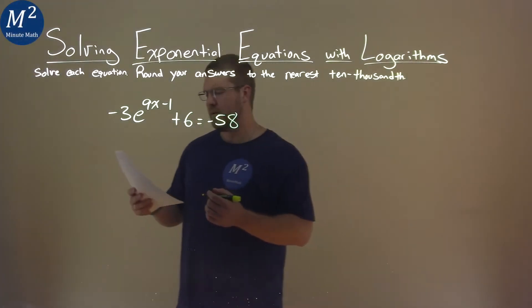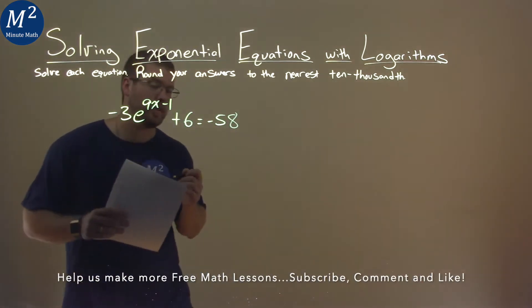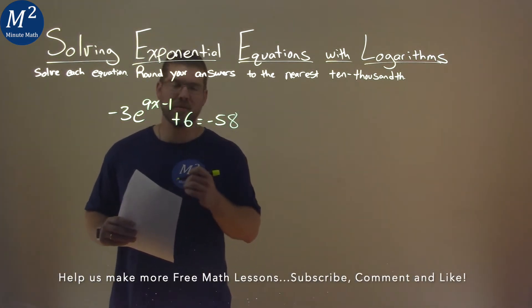I'm given this problem right here: negative 3e to the 9x minus 1 power plus 6 equals negative 58. I have to solve this equation.